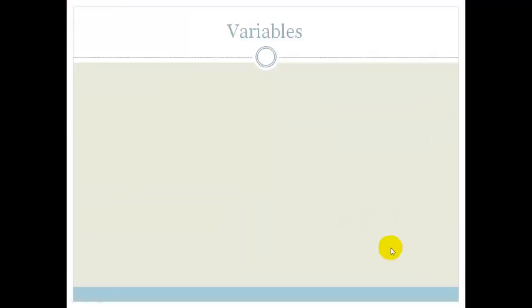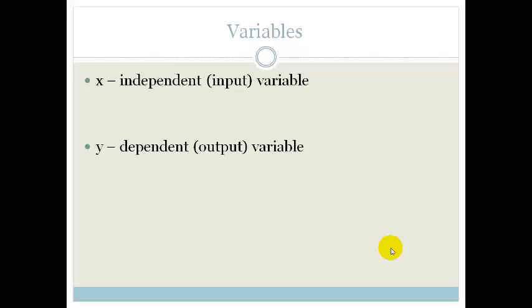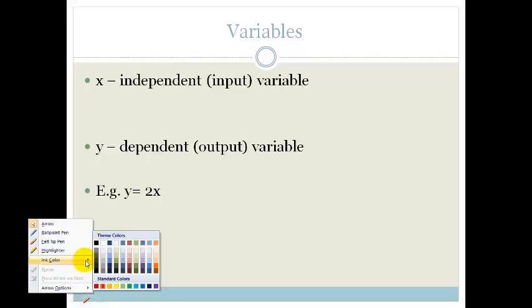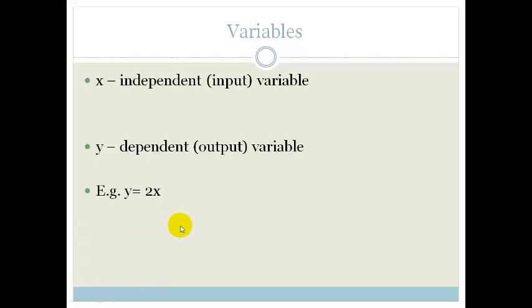Function basics. First of all, we know our variables. We know that x is the independent variable — in other words, that's the input variable, the variable that we're going to put in. y is our dependent variable, so therefore that's our output variable. So if we look at, for example, y is equal to 2x, we can see that if we put in different input values for x.